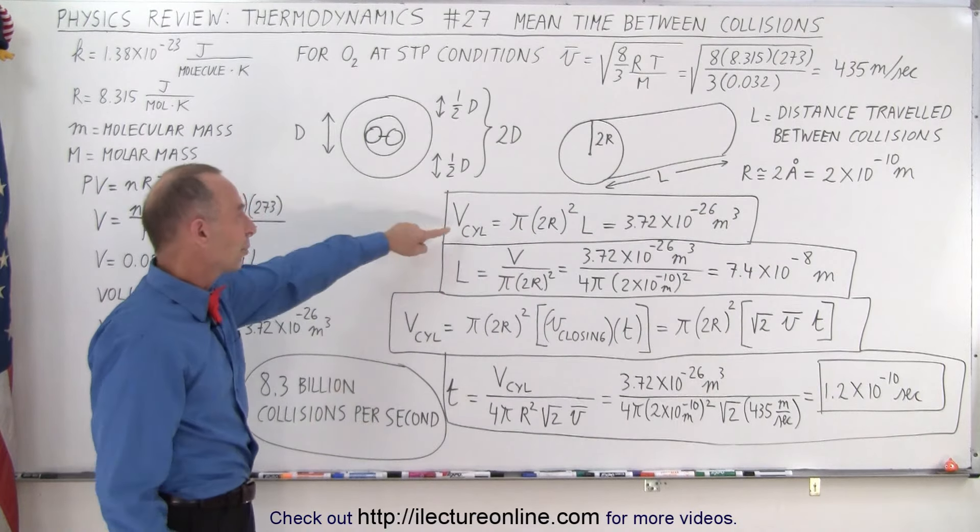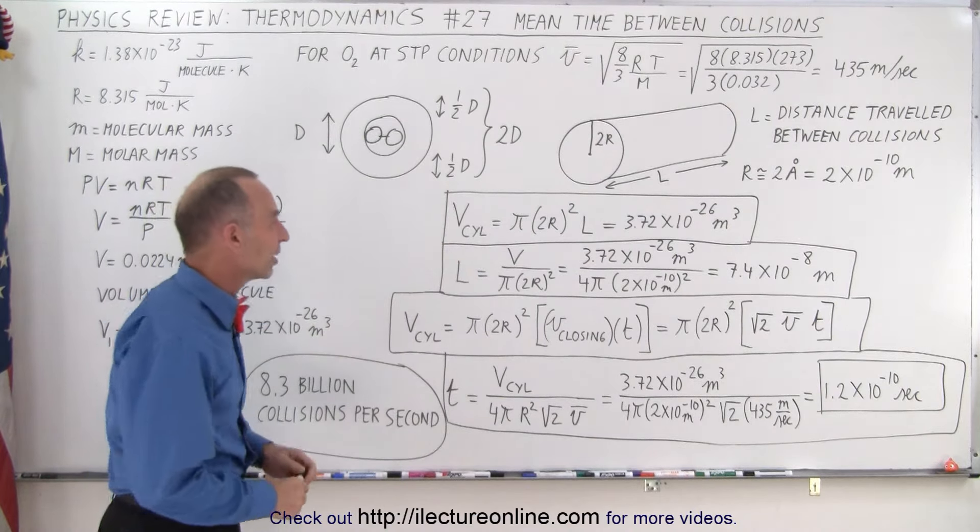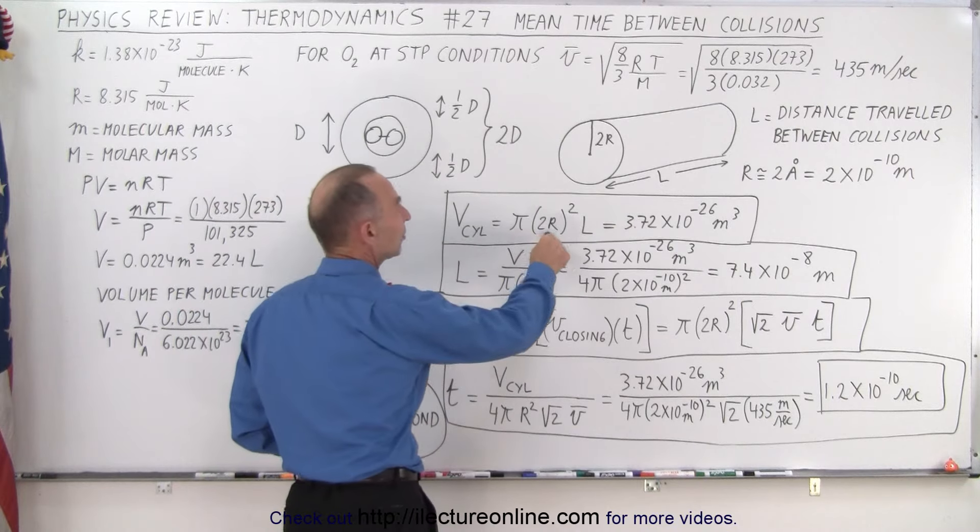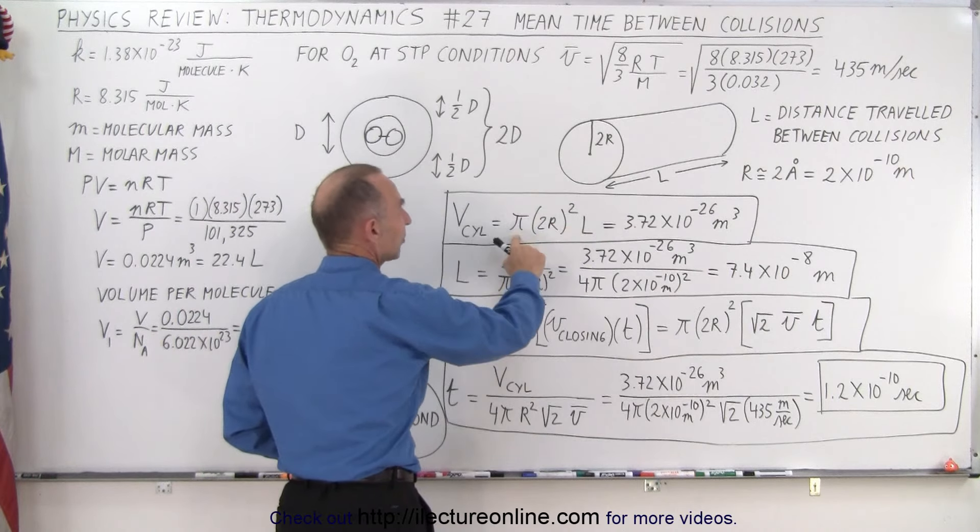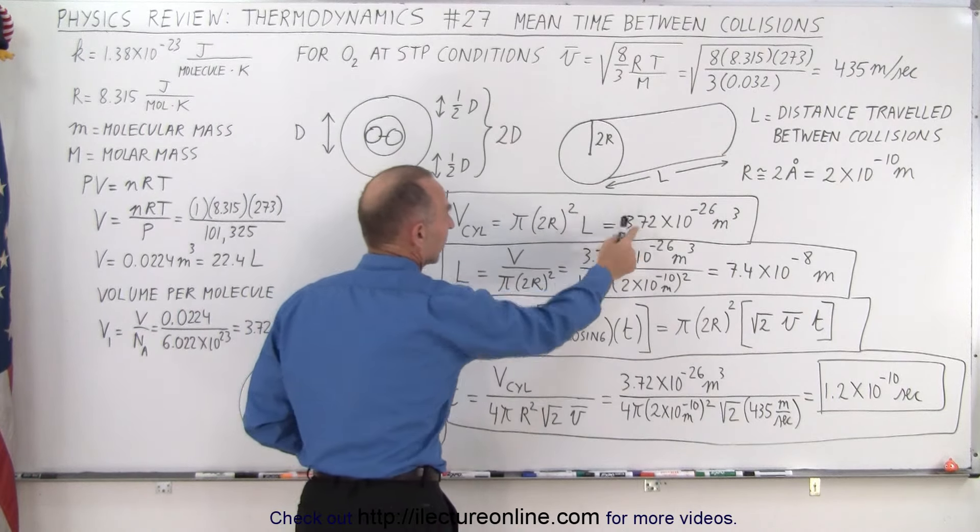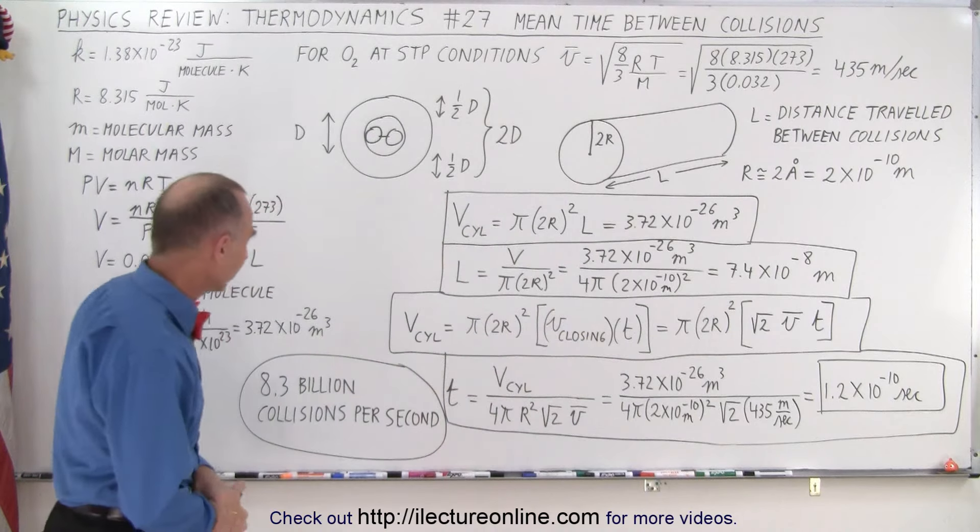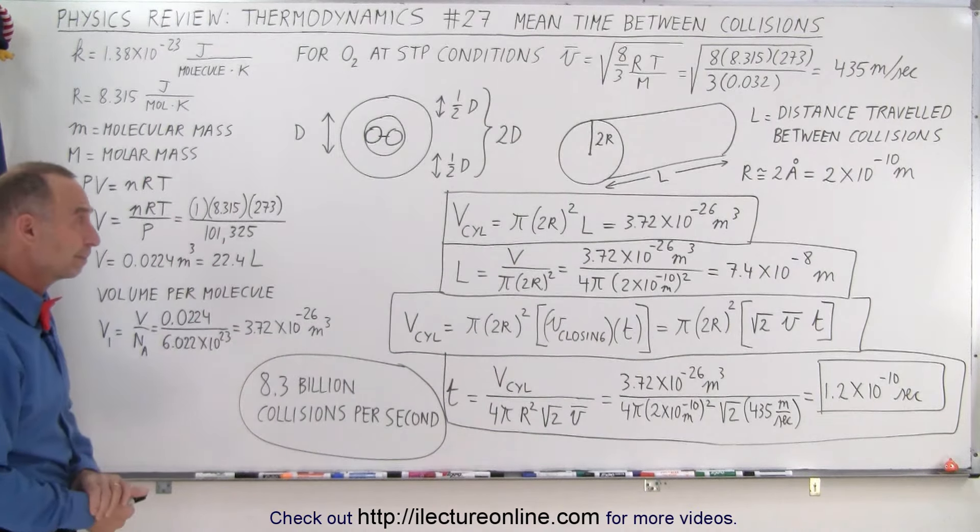And so from that, we could say that the volume of the cylinder must equal 2 times the radius squared times pi times the length. And so we end up with this value right there that has to be the same as this number, of course, over here.